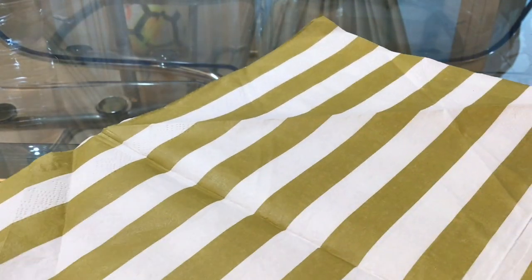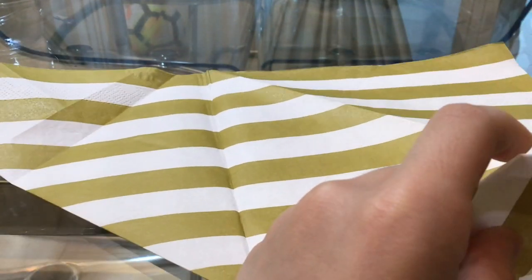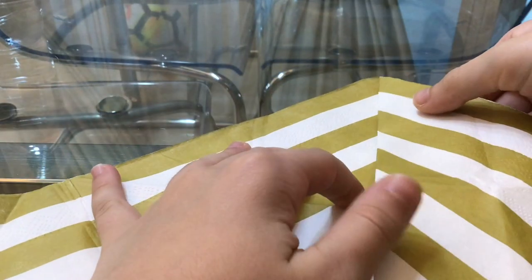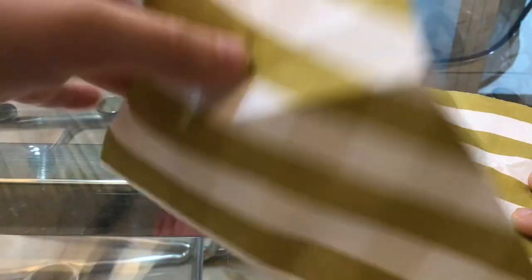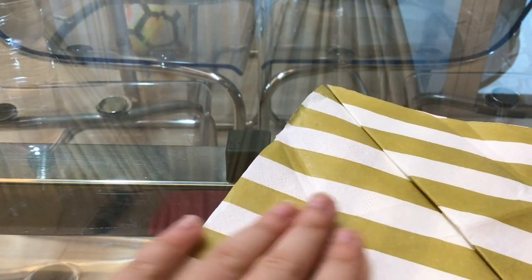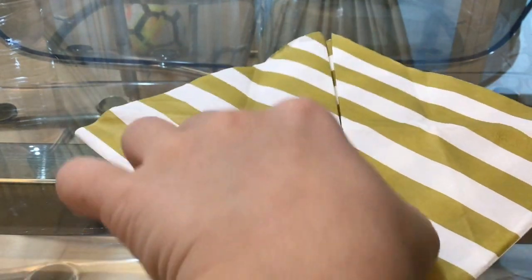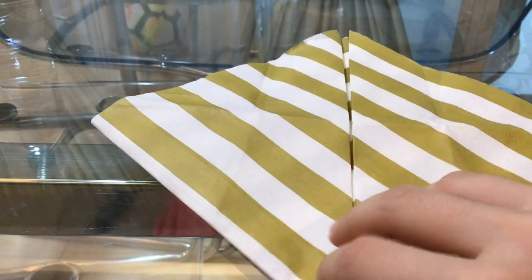Okay, so then when you've got that, you have to get this side right over here and then fold it right there. Perfect. And then do the same with the other side. Right now it should be looking like that, then you turn it around.